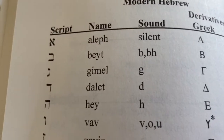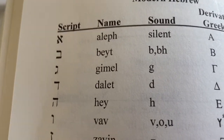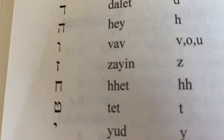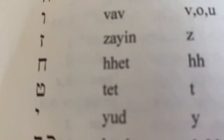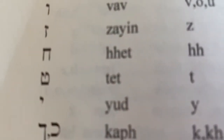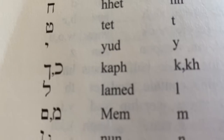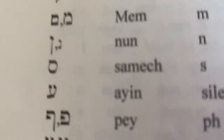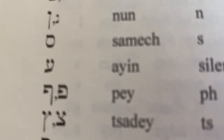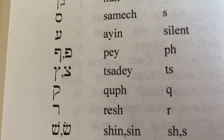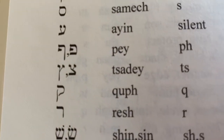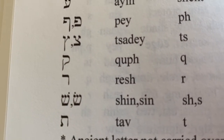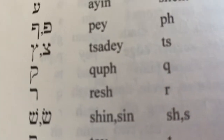The Aleph, Beit, Gimel, Dalet, Hei, Vav, Zayin, Het, Tet, Yod, Kaf, Lamed, Mem, Nun, Tzamek, Ayin, Pei, Tzadeh, Kof, Resh, Shin or Sin, and finally Taf.